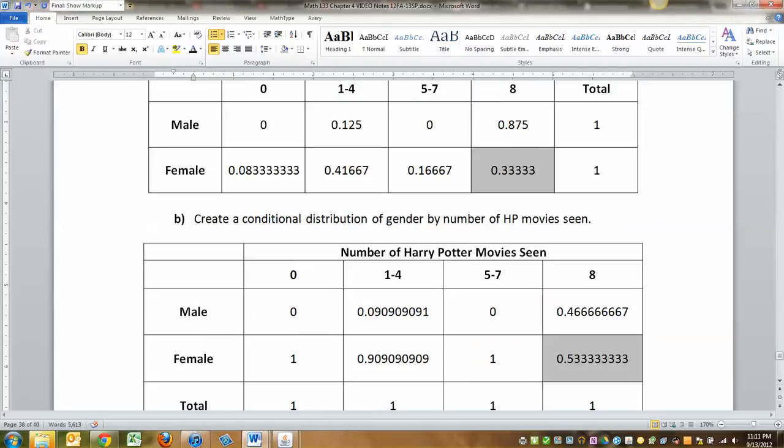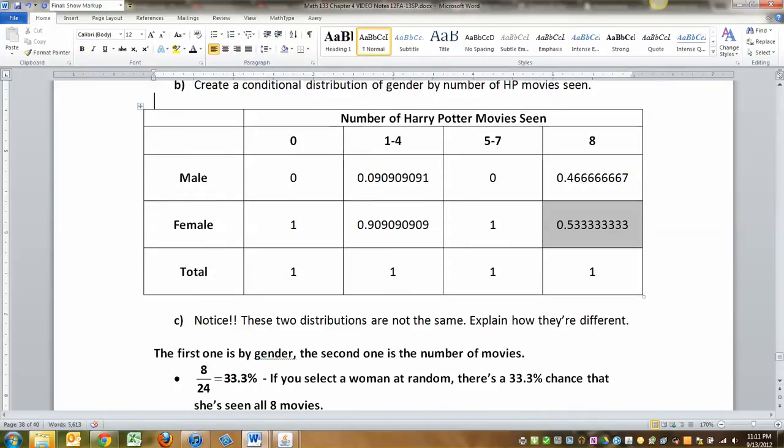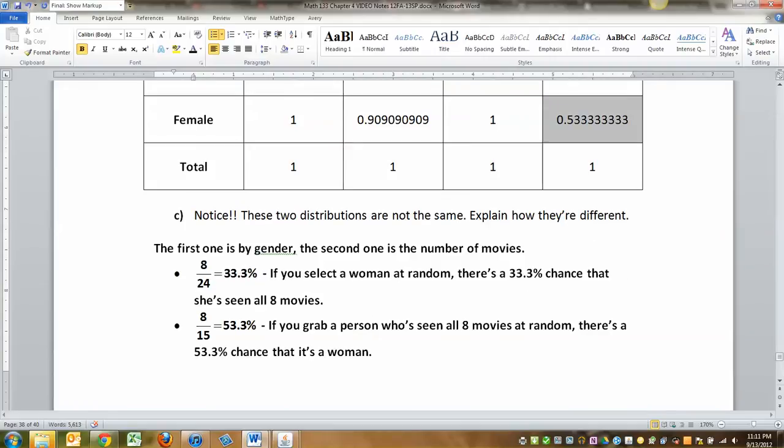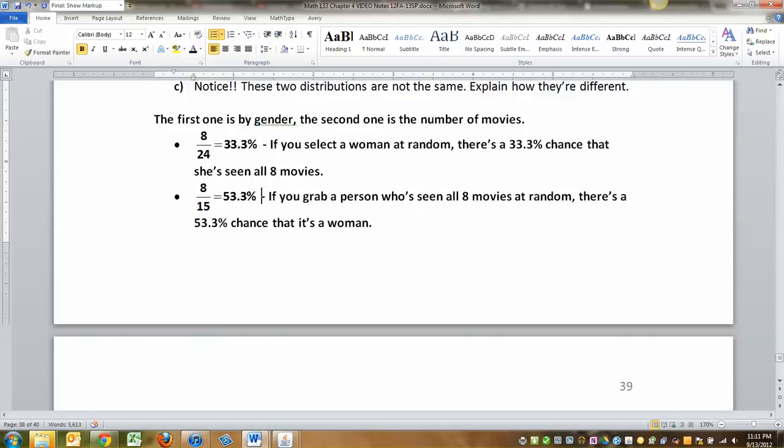So the top one had eight out of 24. That's where this number came from. There were eight women that had seen all eight movies divided by 24 women total. So if you just select a woman at random in that class, there's only a 33% chance that she's seen all eight movies. The bottom number is saying, if you just grab a person that has seen all eight movies, then there was a 53.3% chance that it was a woman. It's like they're two sides of the same coin.